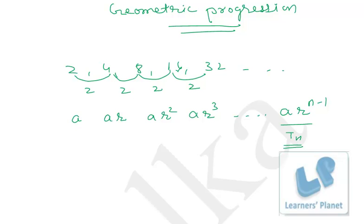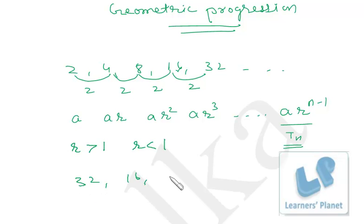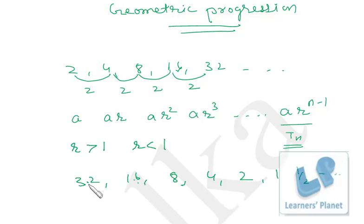The common ratio r can be more than 1 or less than 1. For example, if the sequence is 32, 16, 8, 4, 2, 1, 1/2 and so on, the common ratio is less than 1 because the second term divided by the first term gives 16/32 = 1/2. So r can be greater than 1 or less than 1.